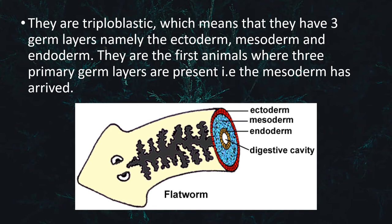These animals are triploblastic, which means that they have three germ layers: namely the ectoderm, the mesoderm, and the endoderm, as seen here. They are the first animals where all three primary germ layers are present.